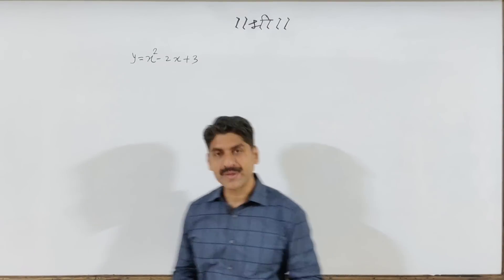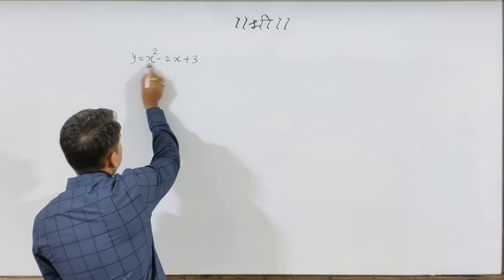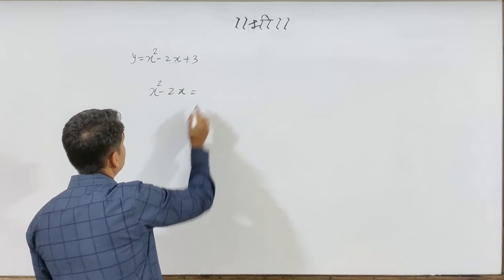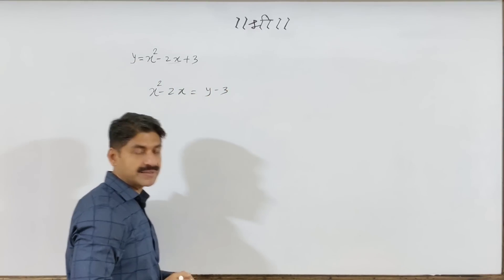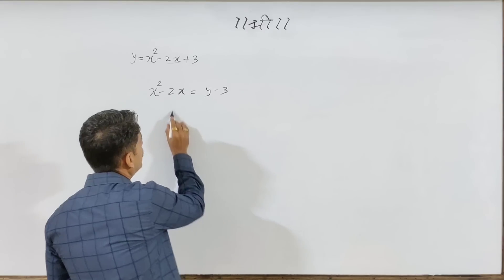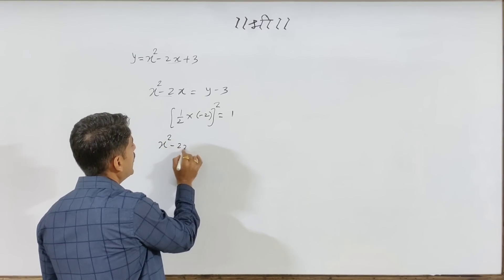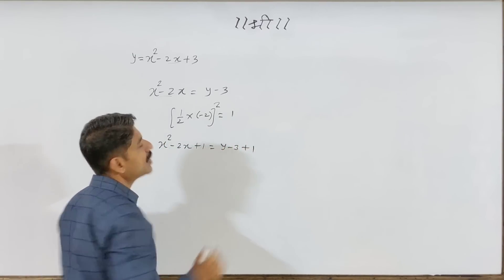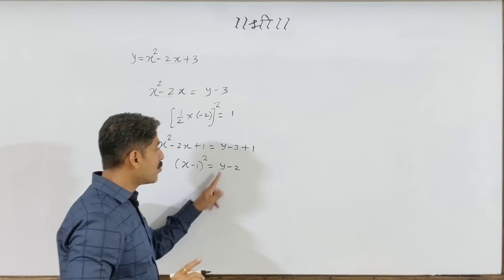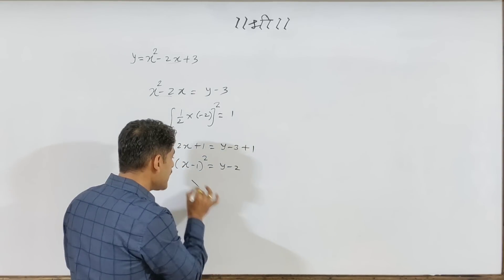I'm going to talk about two problems. There are also PyQ problems involving x squared terms. We have: x squared minus 2x equals y plus 3. We will complete the square — take the third term, half the coefficient of x, which gives us (x minus 1) squared. The coefficient of y is 1.